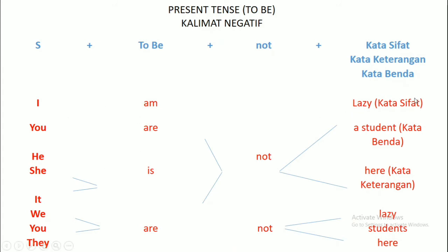Itu untuk kalimat positif. Kemudian untuk kalimat negatif tinggal tambahkan not setelah to be. I am not lazy. You are not a student. She is not here. She is not lazy — sama saja ya. Kalau di sini gak bisa pakai student jadi karena dia tunggal: She is not a student. Kalau ini banyak boleh ya: They are not students — kata bendanya ditambahkan S. We are not lazy. You are not here. Itu tinggal tambahkan not setelah to be.